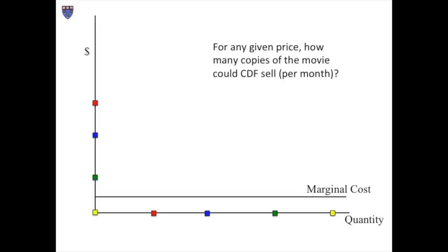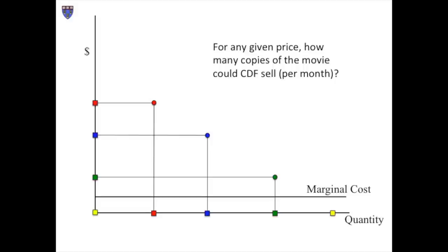It will turn out to be helpful to plot these pairings on the two-dimensional space of the graph. When you connect up all these dots, the result is a demand curve. To keep things simple, I've chosen combinations of price and quantity that generate a straight line rather than a curve. In the real world, the shape of this line would, of course, be more complex. The demand curve is merely the accumulation of many observations: for any given price, how many copies of the movie could CDF sell each month.